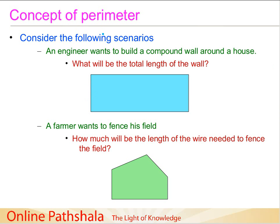There is an engineer who wants to build a compound wall around the house. He needs to find out what is going to be the length of the wall, because it is the length of the wall that will decide everything else. It decides how much bricks he needs, what raw material is required, and on that basis he is going to calculate the cost. His first starting point has to be the length of the wall.